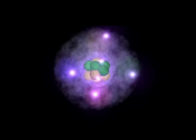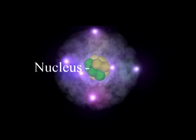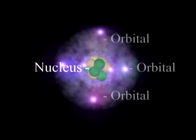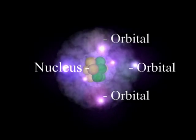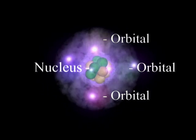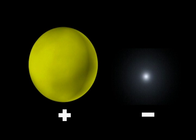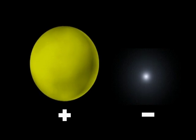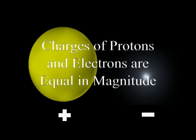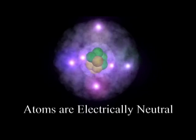Atoms are divided into two major parts: a centrally located nucleus that contains positively charged protons and uncharged neutrons, and one or more orbitals — regions in the space surrounding the nucleus in which negatively charged particles, called electrons, travel about continuously at nearly the speed of light. Protons and neutrons each have a mass approximately 1836 times greater than that of electrons. However, in spite of this huge difference in mass, their electrical charges, though opposite, are equal in magnitude. As atoms have equal numbers of protons and electrons, they are electrically neutral.